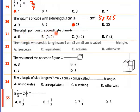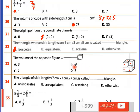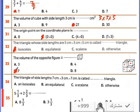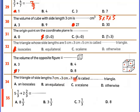The origin point on the coordinate plane is (0, 0). The triangle with side lengths 5, 3, 5 has two sides equal, so it's an isosceles triangle. The triangle with sides 7, 3, 7 also has two sides equal, so it's an isosceles triangle.